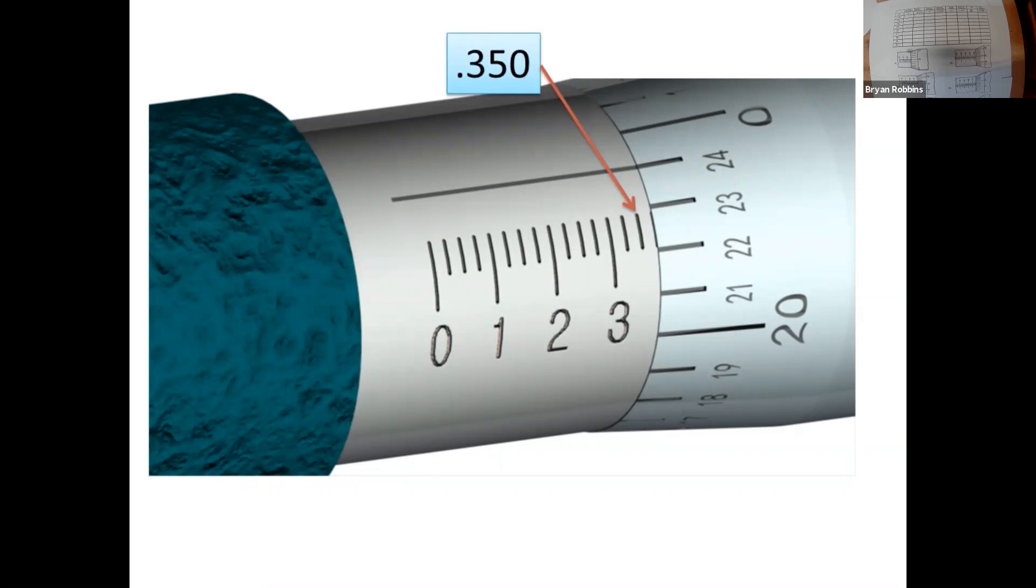And that mark would read .350. Now, we can get the next decimal place by reading the thimble scale. And that one, remember, is reading in thousandths of an inch. So, this is 20 thousandths, 21, 22, 23. This is 24 thousandths, so that's .024. So, the reading of this micrometer is the .350 plus the .024. Think of it as adding 350 and 24.